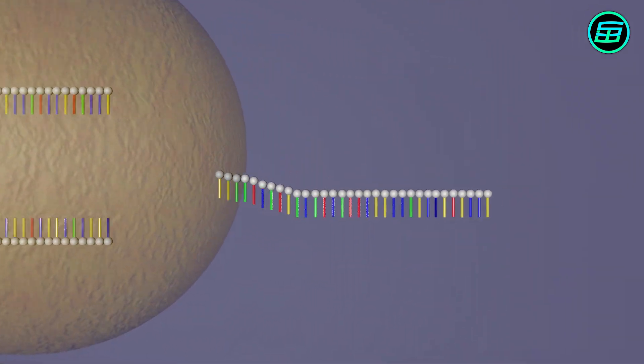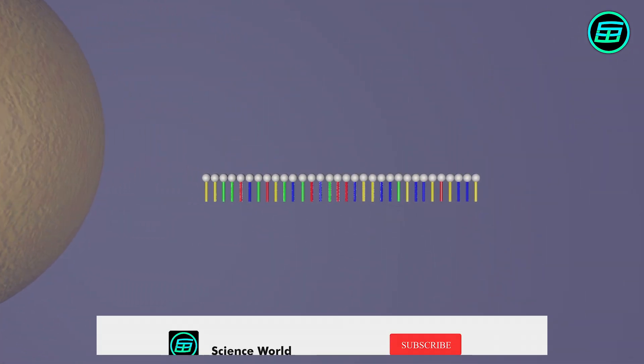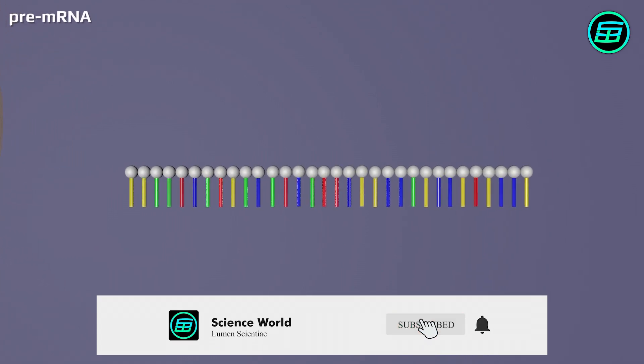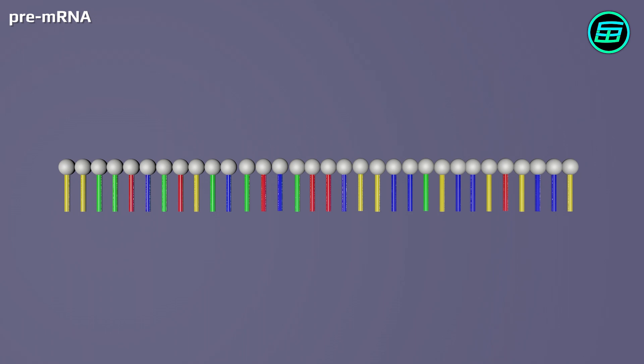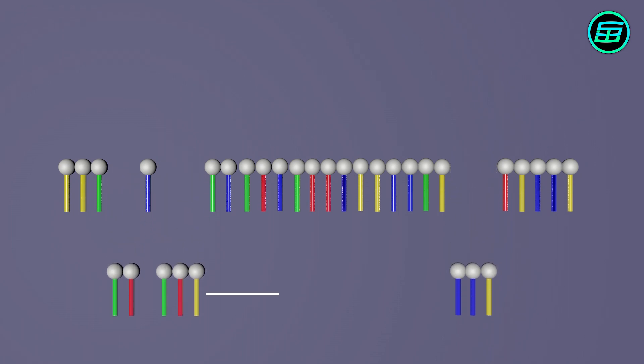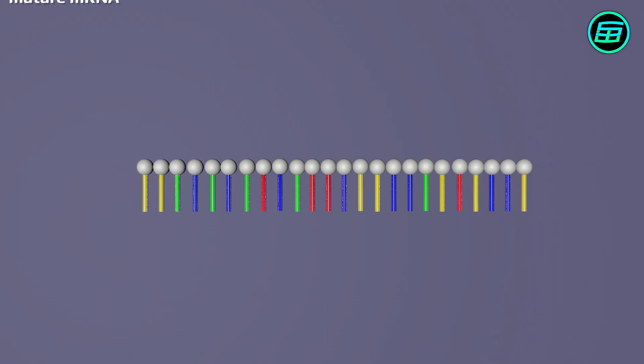At the end of the process, pre-mRNA is formed. It's called pre because there are some base series known as introns that aren't used in protein synthesis. These bases are removed before the mature mRNA is formed.